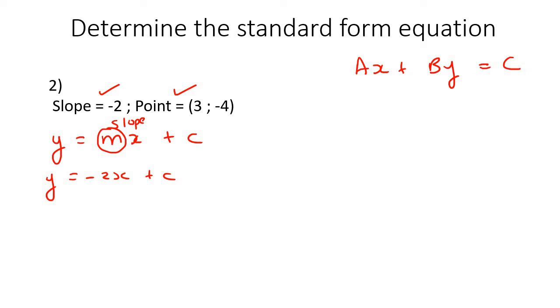Then to find C, we would plug this over here and this one over here. And so we end up with negative 4 equals to negative 2 times 3 plus C. And so negative 4 is going to be equal to negative 6 plus C. If you take the negative 6 over, it becomes a positive. So C is 2.